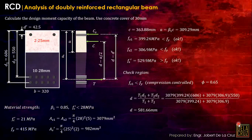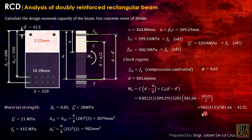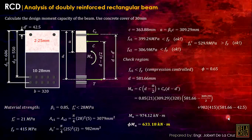Now we can calculate the nominal moment capacity. Mn = C × (D − a/2) + Cs × (D − D'). Substituting values: As' = 982, and since Fs' exceeded Fy, we use Fy as the yielding strength for the compression bar. Multiply by the moment arm to get Mn. Then φMn = 0.65 × Mn, which is our final design moment.